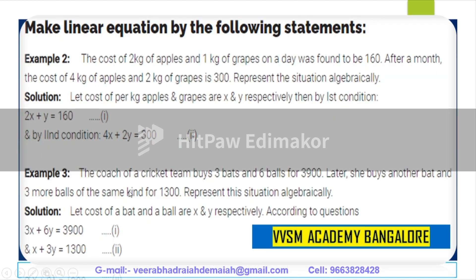Making a linear equation from the following statement: the cost of 2 kg of apples and 1 kg of grapes on a day was found to be 160. After a month, the cost of 4 kg of apples and 2 kg of grapes is 300.